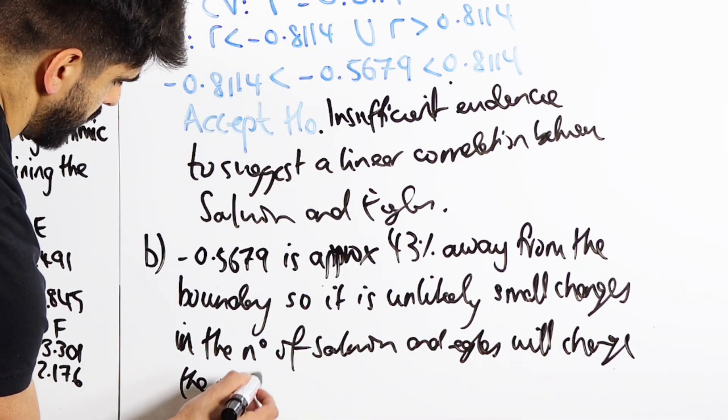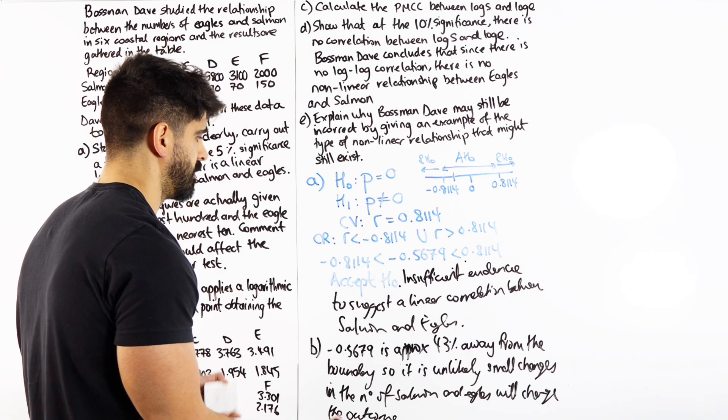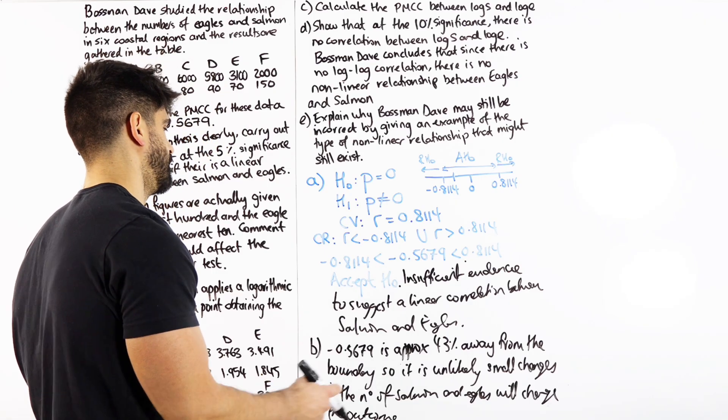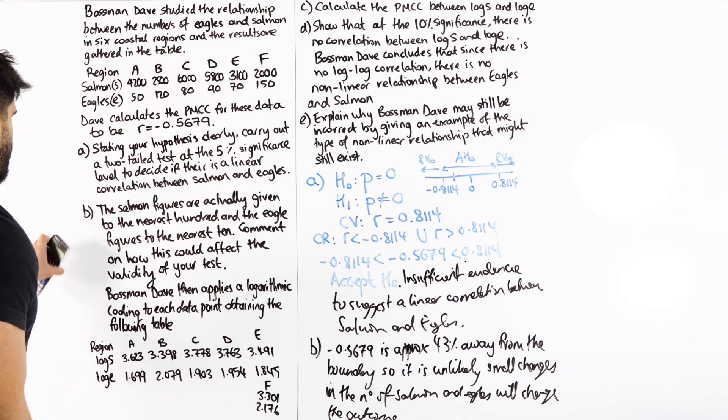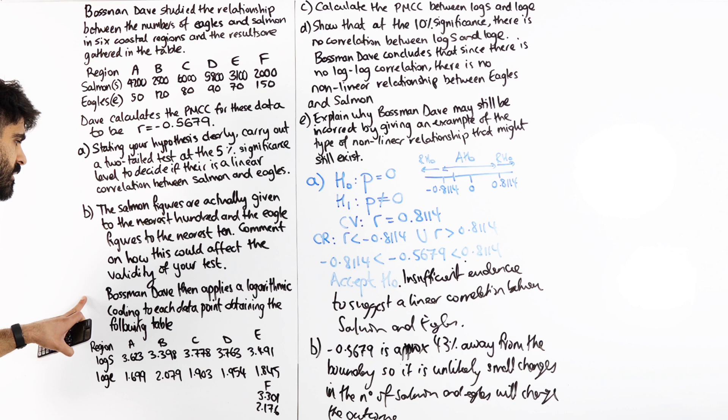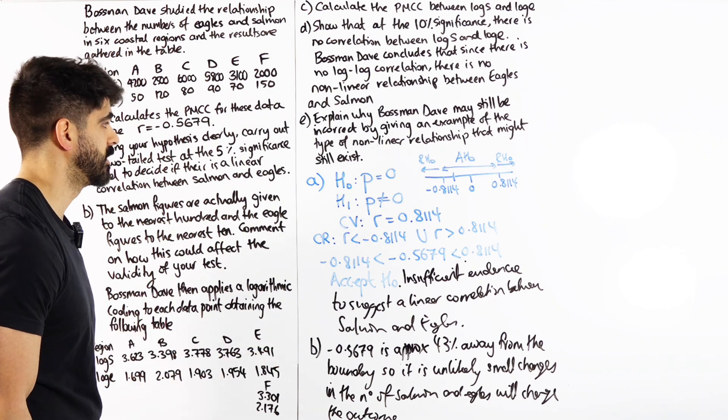So it's unlikely, it is unlikely small changes in the number of salmon and eagles will change the outcome. If it was super close, maybe under 10%, I'd probably suggest that it could make a difference.